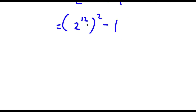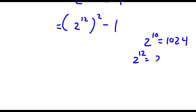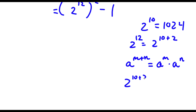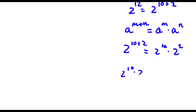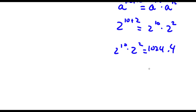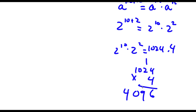Now let's first find the exact value of 2 to the power of 12. Well, 2 to the power of 10 is 1024. And 2 to the power of 12 is the same thing as 2 to the power of 10 plus 2. If I have something in the form a to the power of m plus n, this equals a to the power of m times a to the power of n. So 2 to the power of 10 plus 2 equals 2 to the power of 10 times 2 to the power of 2, which is 1024 times 4. That gives us 4096. So this becomes 4096 squared minus 1.